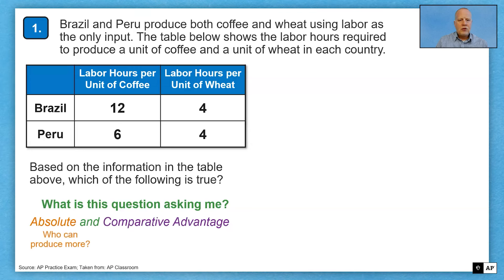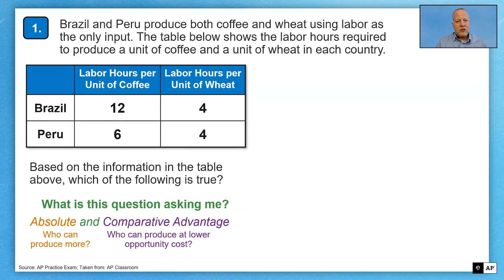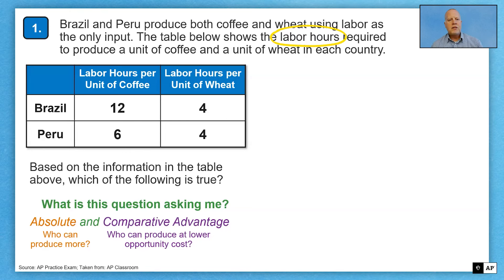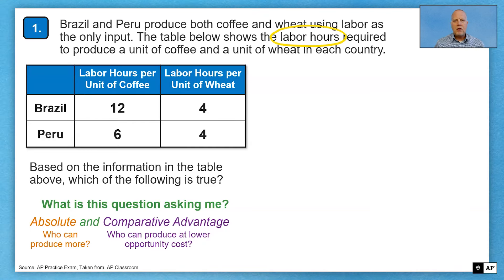Remind yourself: absolute advantage is about who can produce more. Comparative advantage is who can produce at a lower opportunity cost. Before I can consider either, I've got to identify whether I'm dealing with input data or output data. Because they gave me a particular amount of time — labor hours to produce one unit — that tells me I'm dealing with an input problem. I've got to think in terms of input data to evaluate what's given and determine the correct solution.